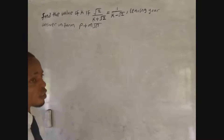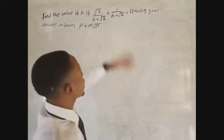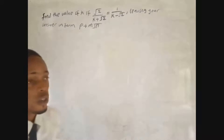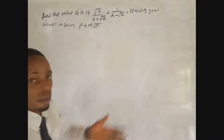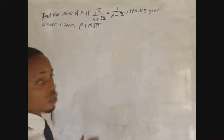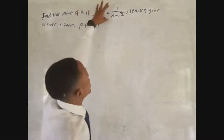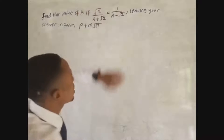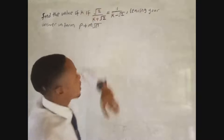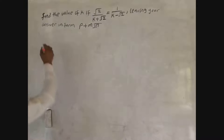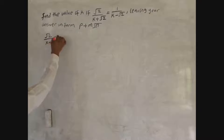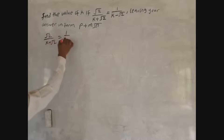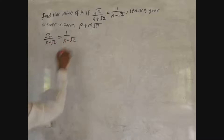So the first thing to remember is the topic. When you see a question like this, the topic is surds. In this case, you need to remember how you can solve any surd problem according to the rules of surds. So let's look at how to solve it. We have √2 over (k + √2) equal to 1 over (k − √2).